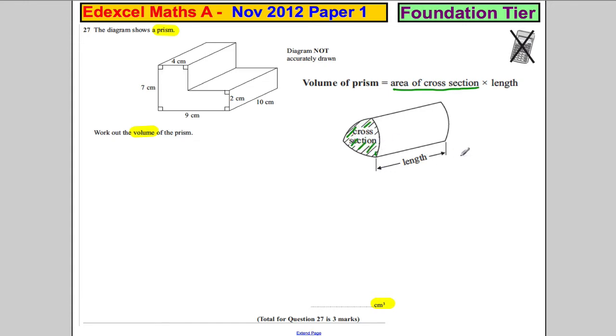We multiply it by the length. We have the length—the length is 10. All we've got to do is work out the area of this cross-section. I'm going to take a photo of that to help us out.